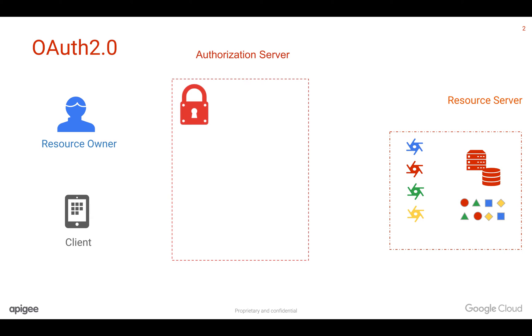And the last role is the authorization server, which grants access to these APIs securely. Let's see how these different roles communicate together and how the app gets access to the data via APIs.